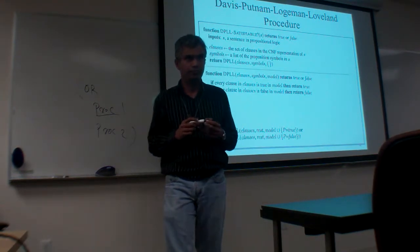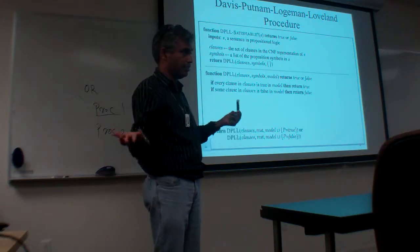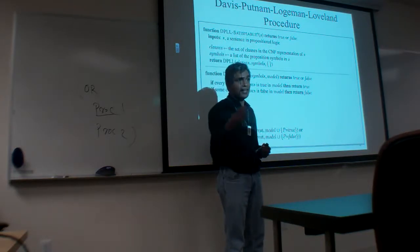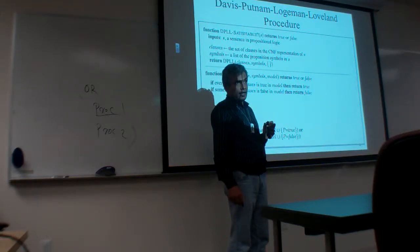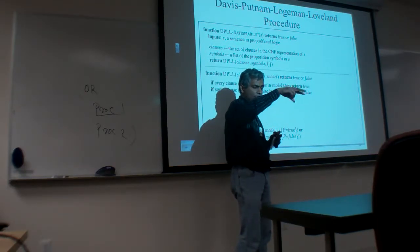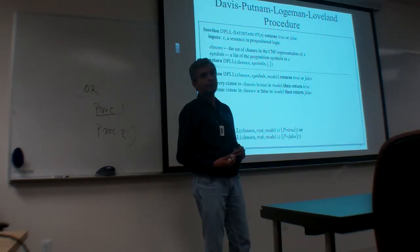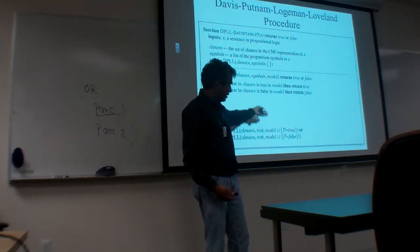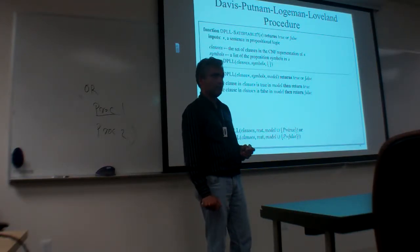This is a pure backtracking search algorithm. In the worst case it does 2^n search, but it avoids unnecessary work — for example, if all clauses get set as soon as you set P equals true, it stops right away. It's a good algorithm. In the worst case it takes 2^n, but sometimes it can take less.